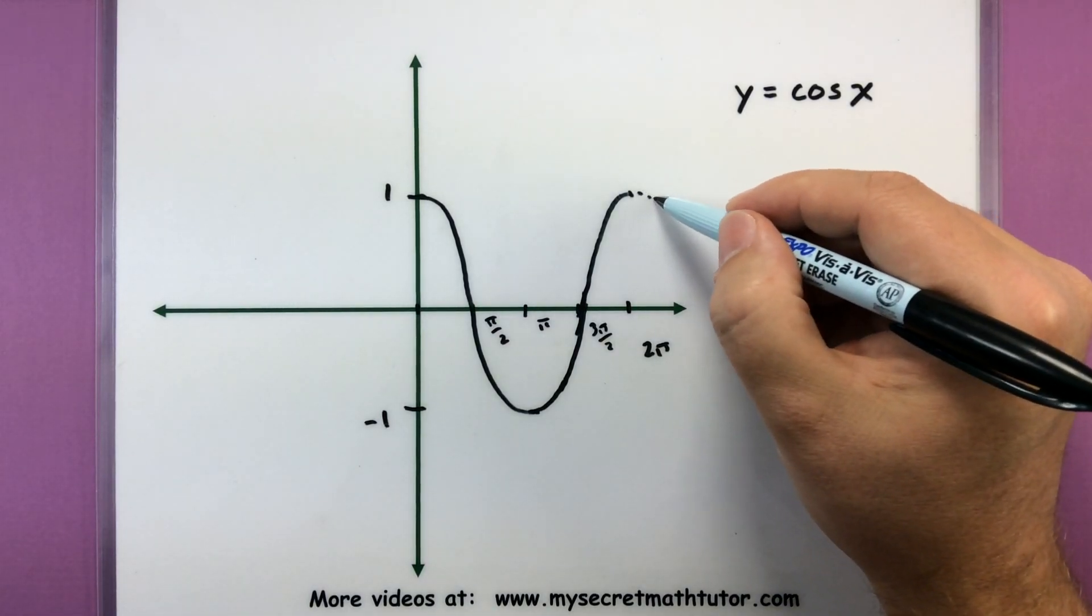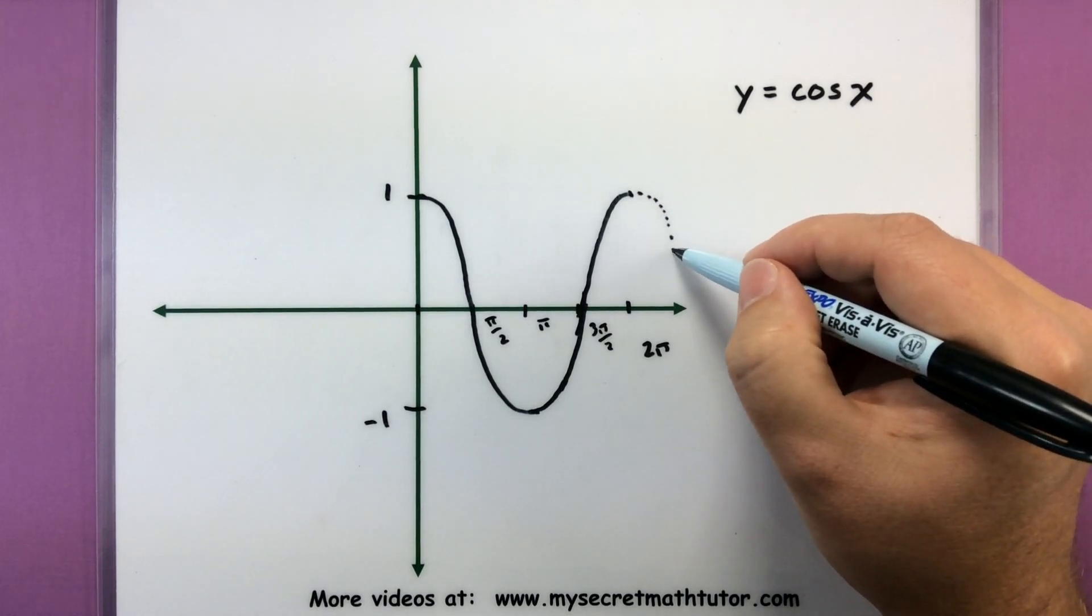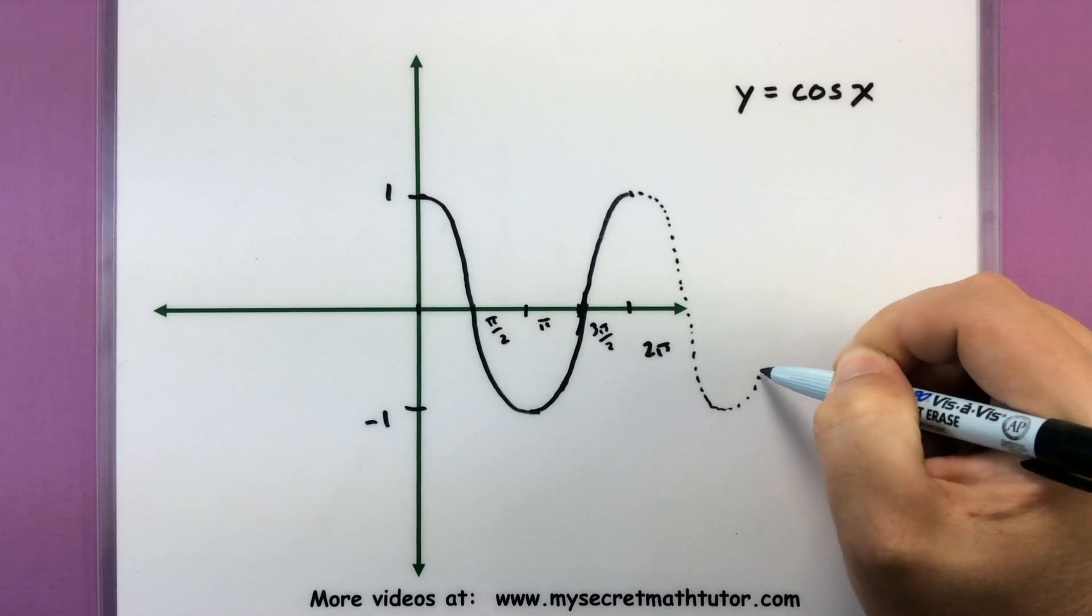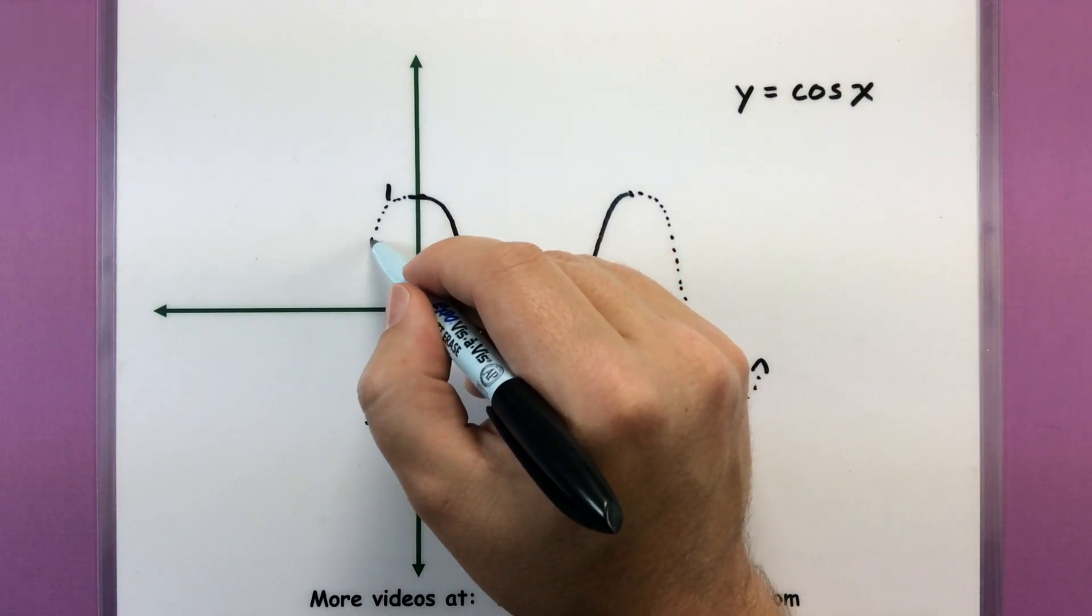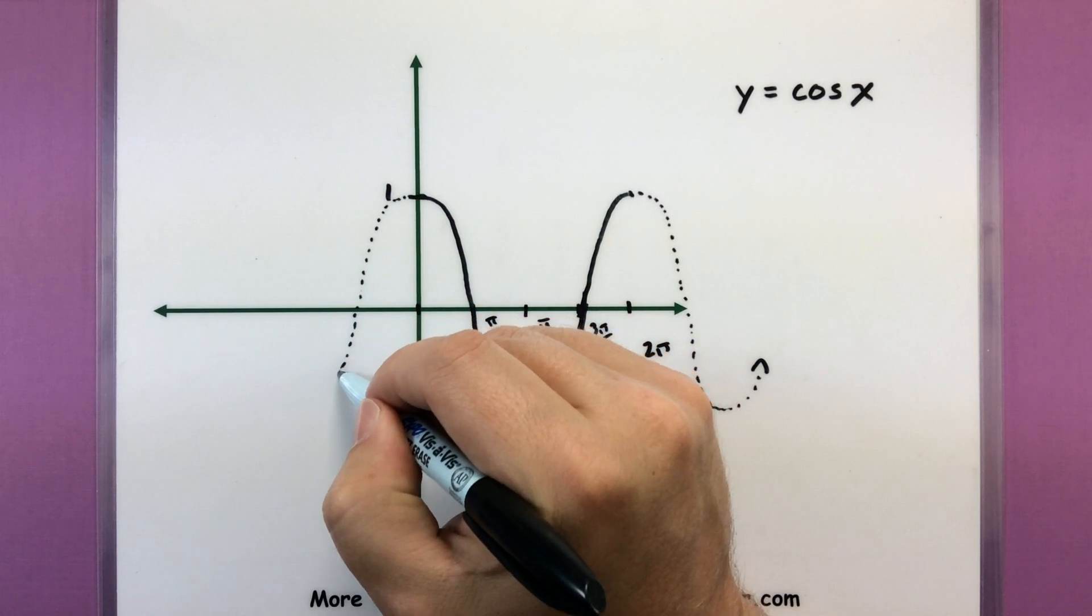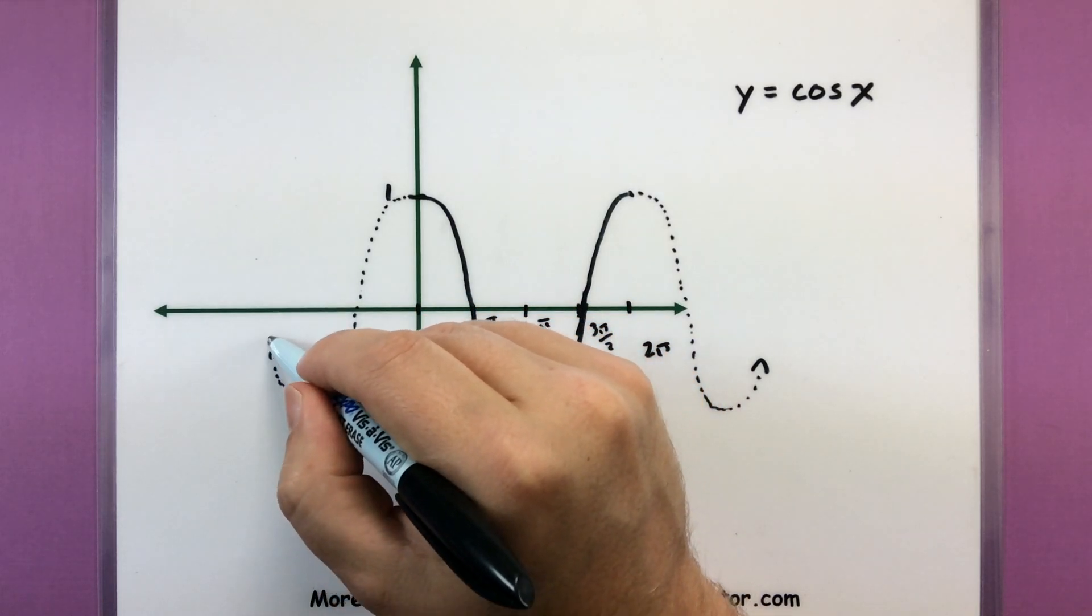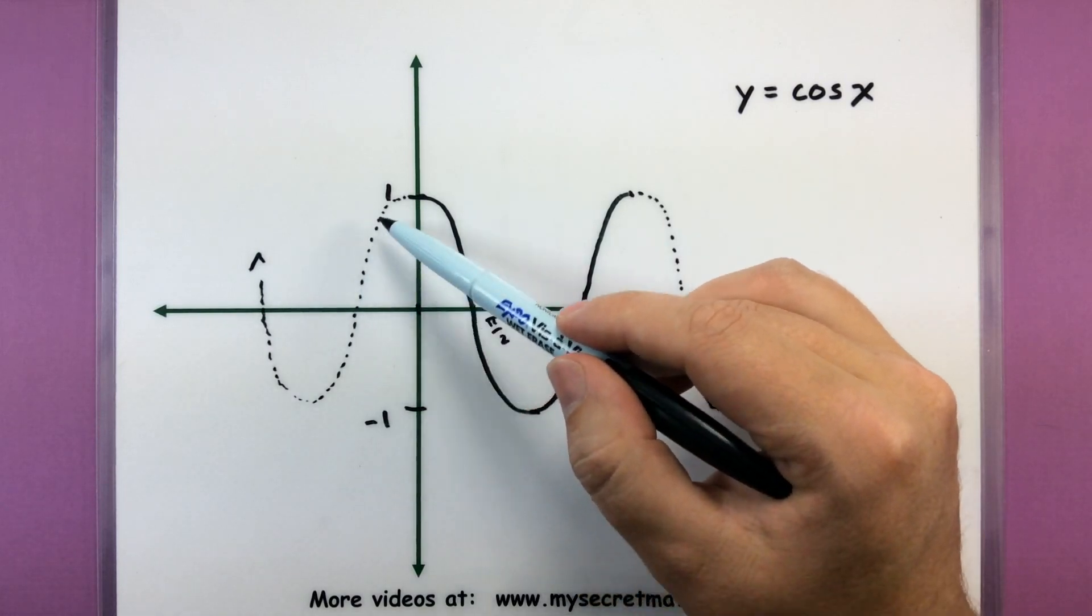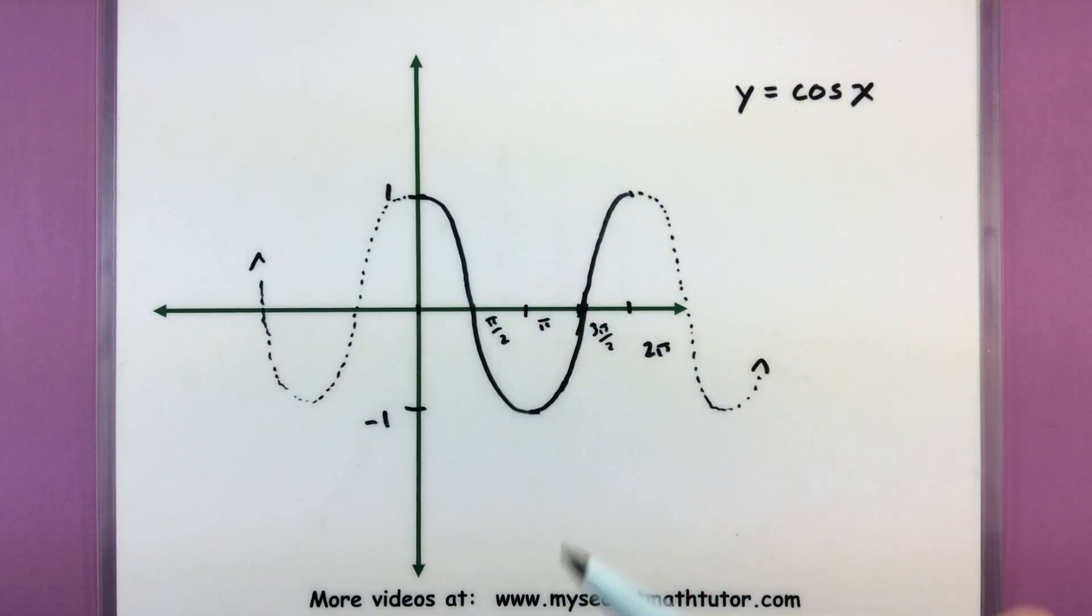And of course, even this guy continues on. So it would drop back down again, bottom out, continue back up, and it would go the other way as well. And this is what I mean by it looks exactly like sine, it's just been shifted over. You can still see that wavy motion, that S shape of sine, but it has been moved over.